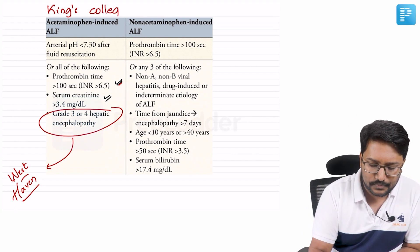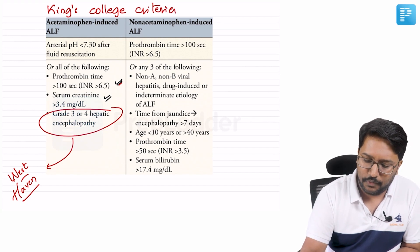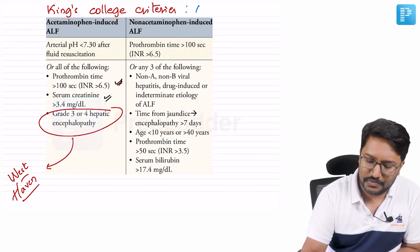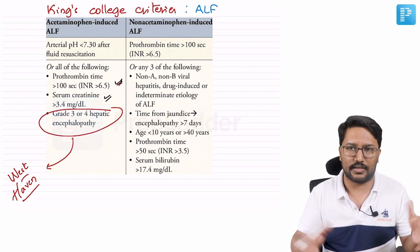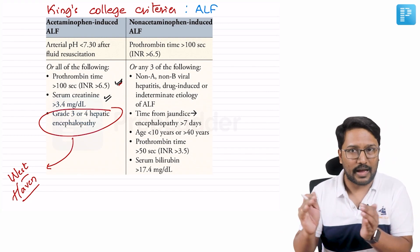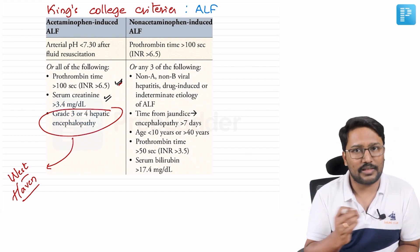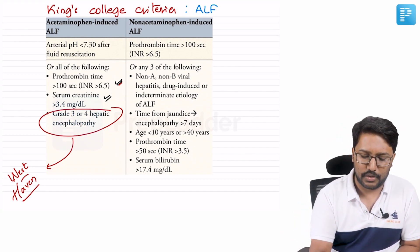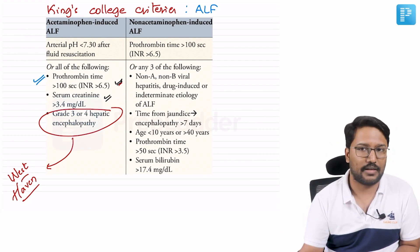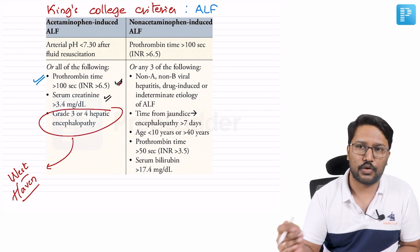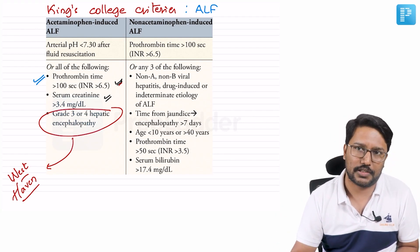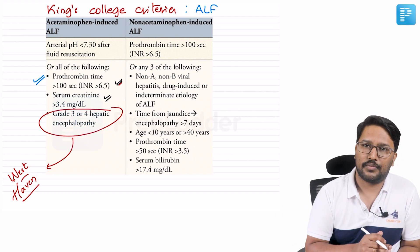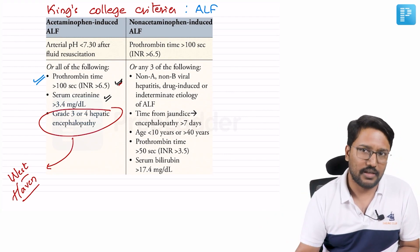King's College Criteria is for liver transplantation in patients with acute liver failure. It separates causes of acute liver failure into two categories: paracetamol toxicity and non-paracetamol toxicity. For paracetamol poisoning, an INR more than 6.5 confers bad prognosis and calls for liver transplantation. If it is less than that, we can still manage with N-acetyl cysteine.